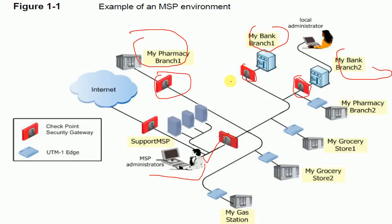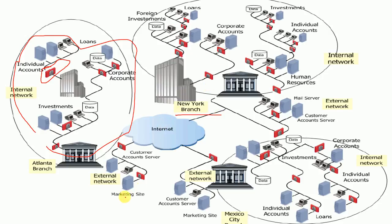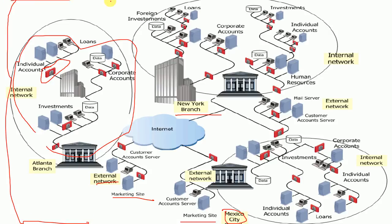Provider One is required where there are hundreds or thousands of firewalls. Suppose you are working in a company with only five hundred employees — you don't need Provider One. In this second diagram you can see the internal network with multiple firewalls, the New York branch, the marketing site, and the Mexico City external site — all with many firewalls. In this type of scenario we require Provider One.